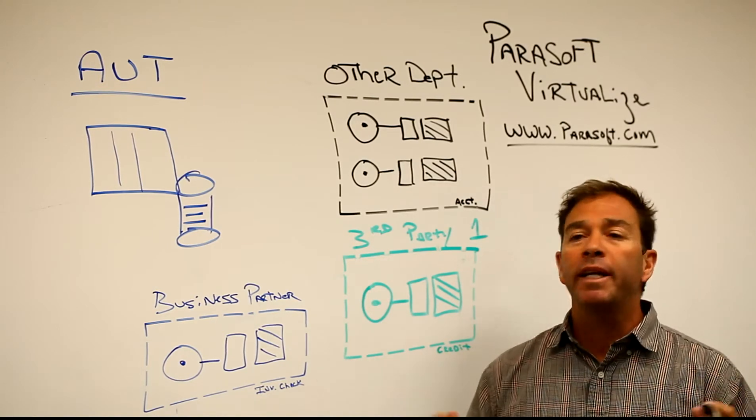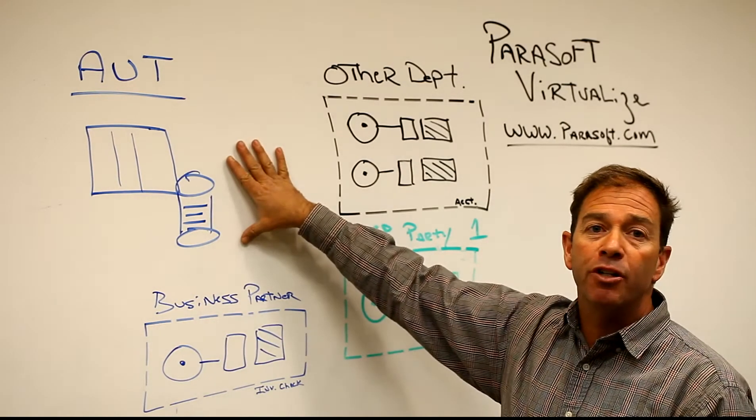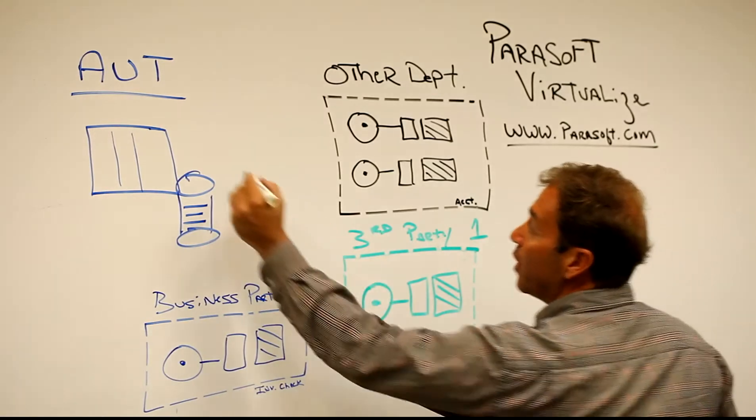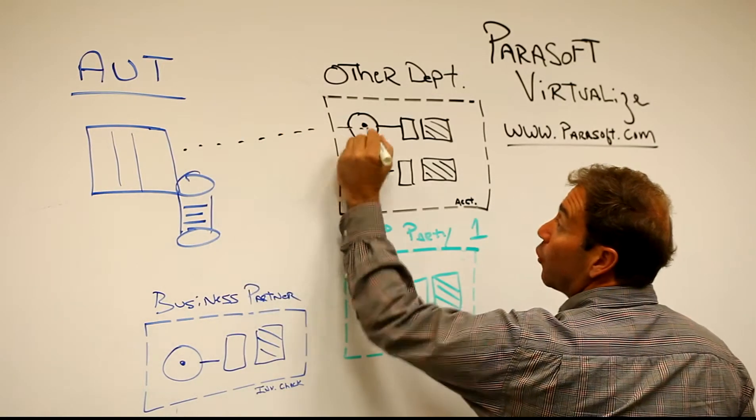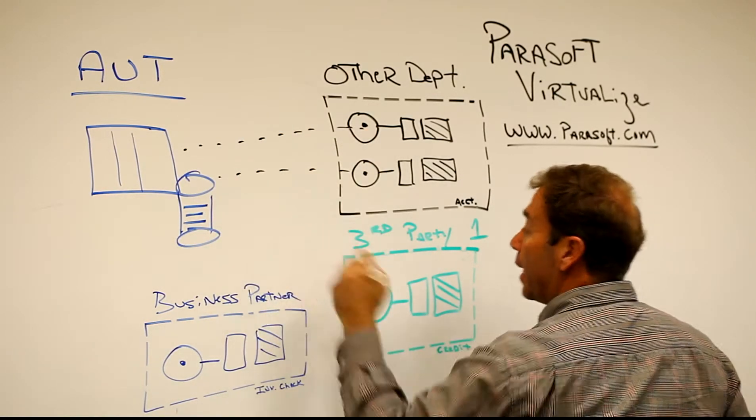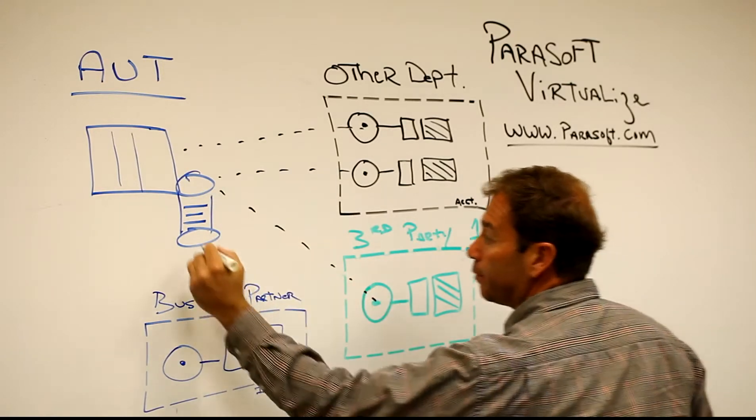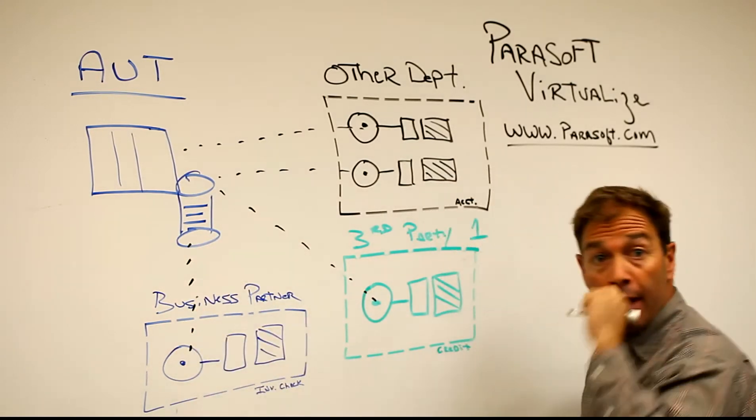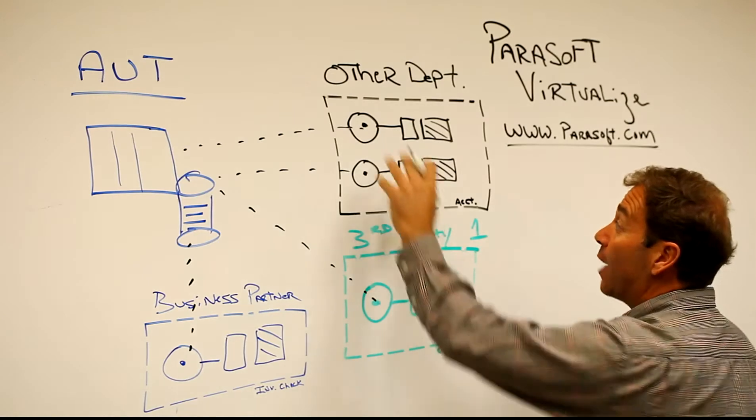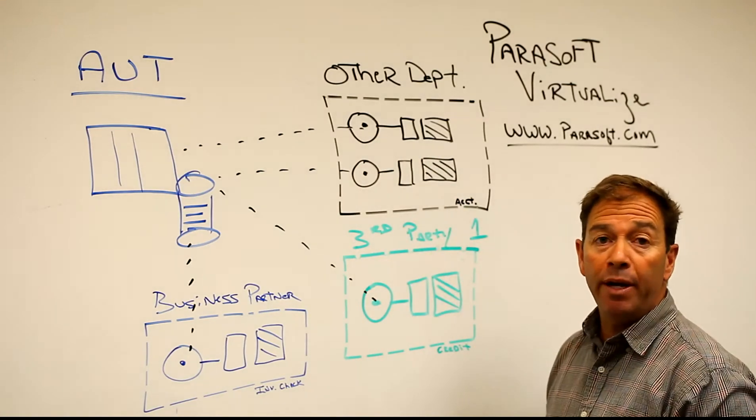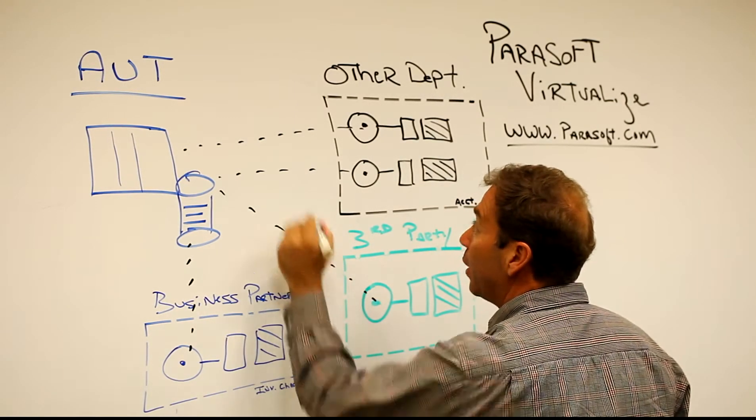We do this by looking at these transactions, capturing the transactions, and then cutting out from the actual connection to the endpoint to an emulated service.